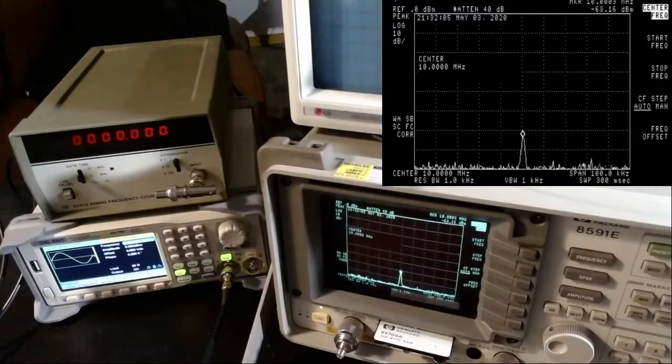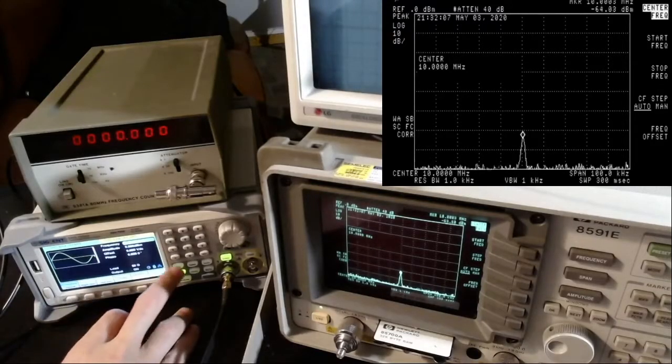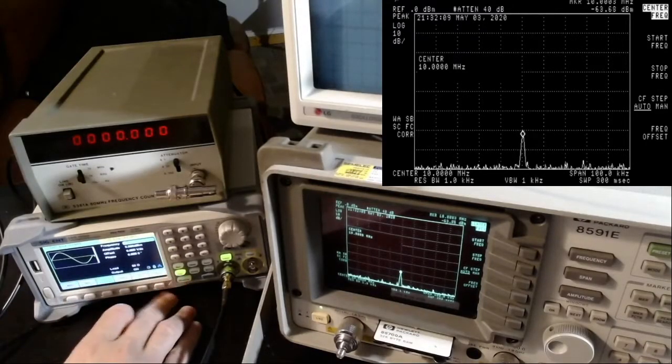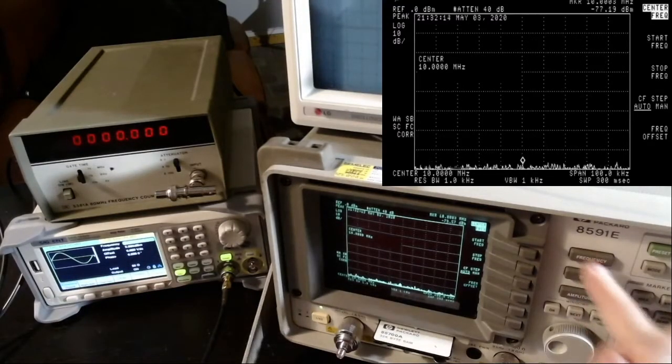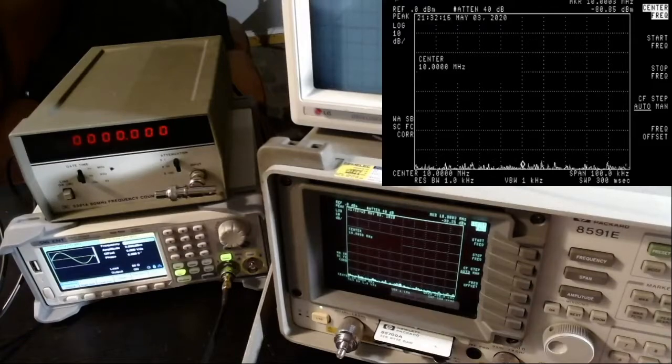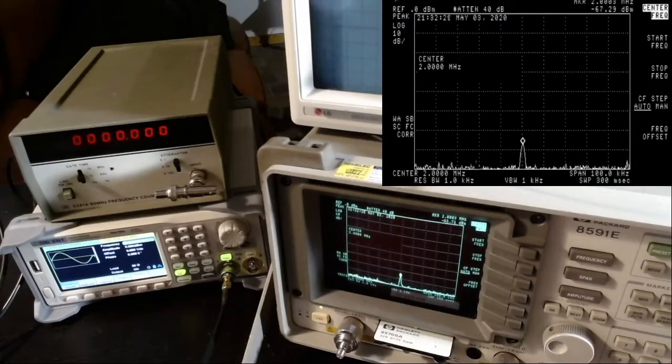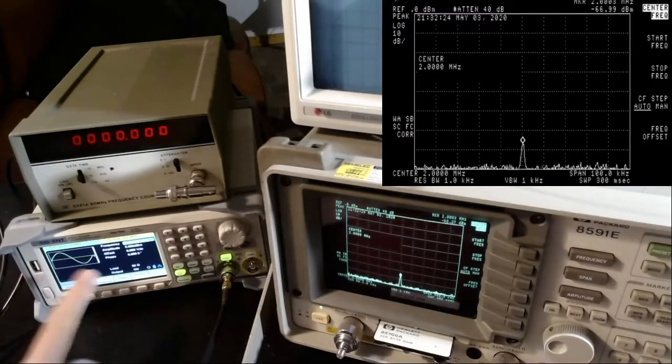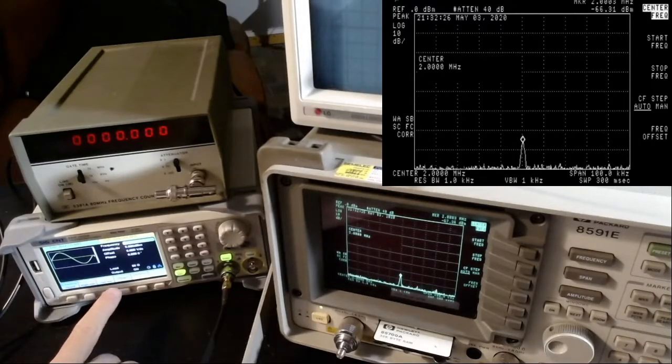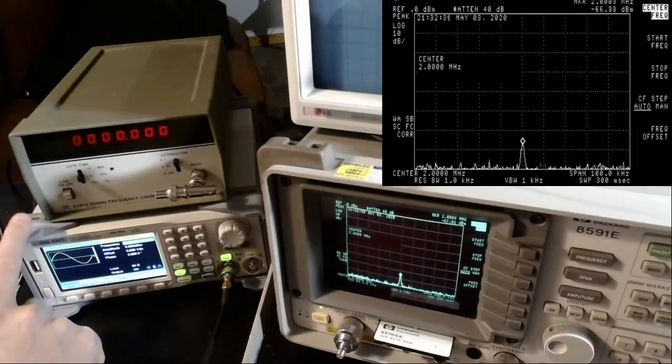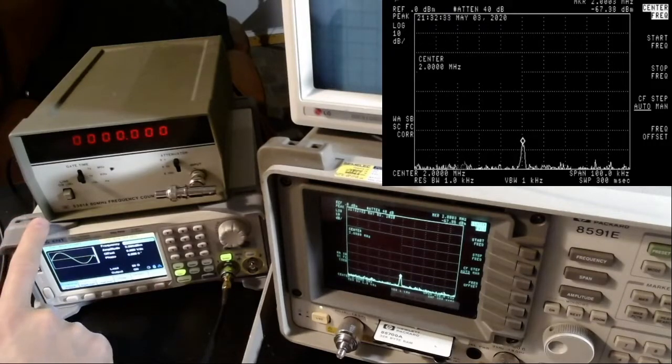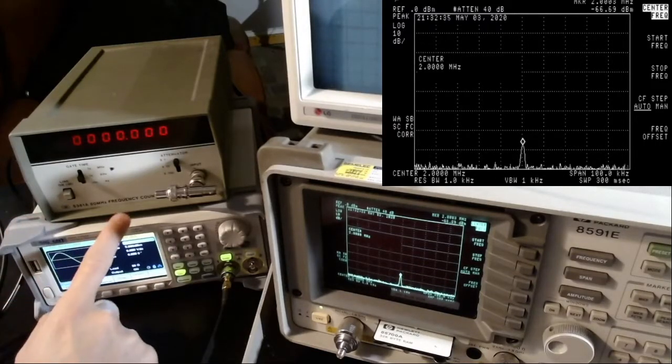Let me try 1 megahertz. The first harmonics is at 2 megahertz. There it is at minus 66. Again, the unit is in fact better than specification, which is great. This is not surprising. I was a bit surprised when I found out in the previous video that this unit did not meet the specifications, because when it is sold it comes with a certificate of calibration.